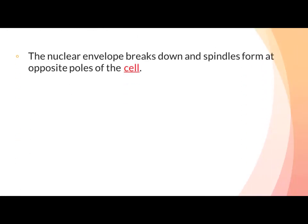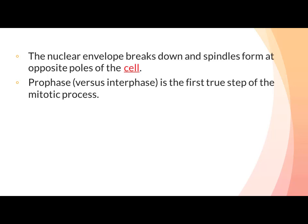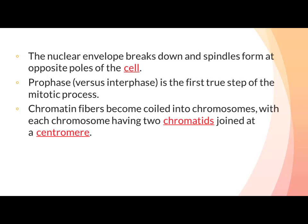The nuclear envelope breaks down and spindle forms at opposite poles of the cell. Nuclear membrane غائب ہو جاتا ہے اور spindle fibers کی formation start ہو جاتی ہے۔ Prophase mitosis کا پہلا true step ہے۔ Chromatin fibers histone proteins کے گرد جمع ہو کر chromosomes بنا لیتے ہیں، with each chromosome having two chromatids joined at the centromere.